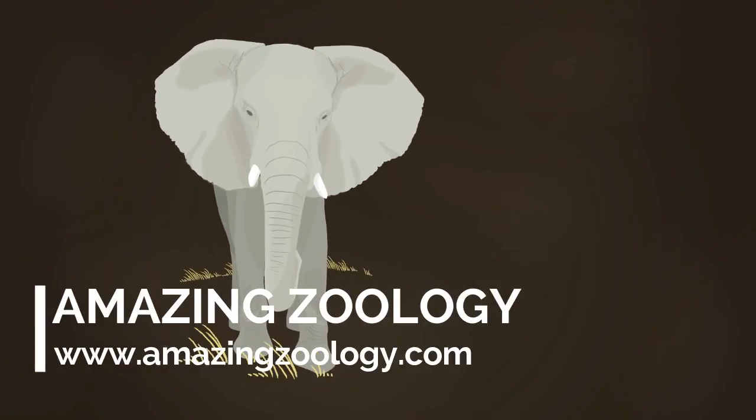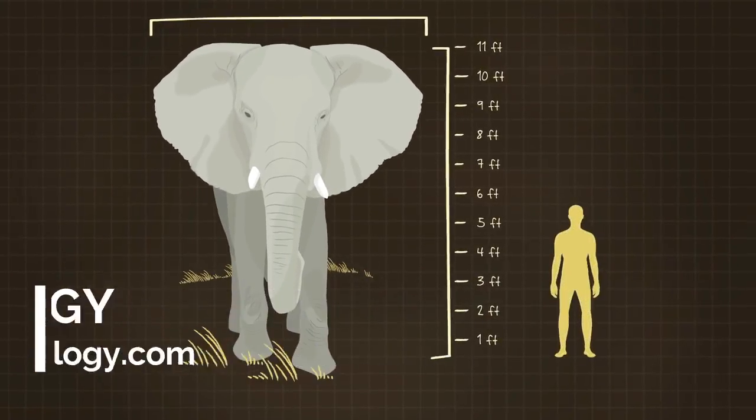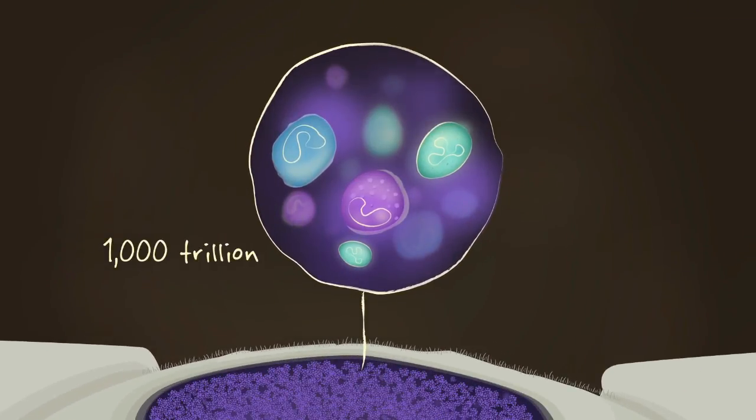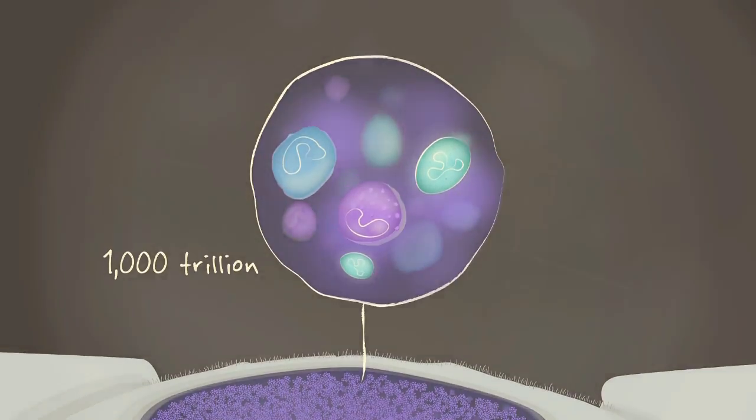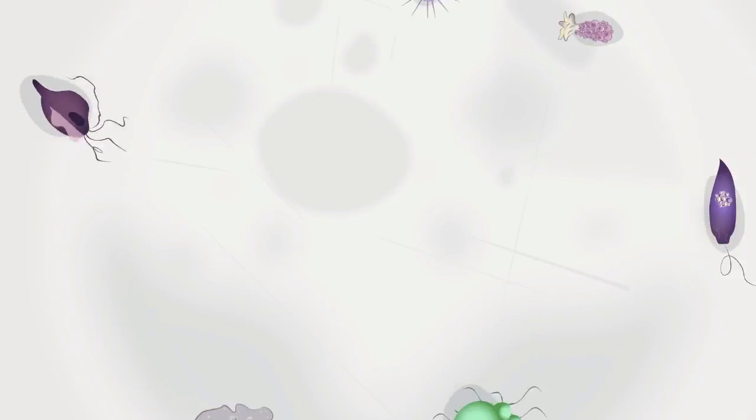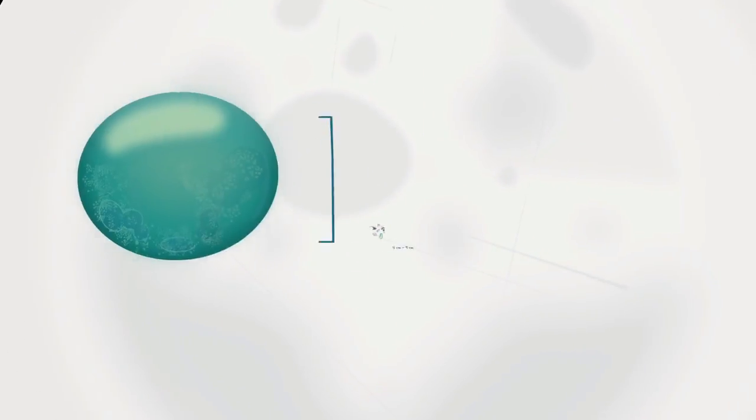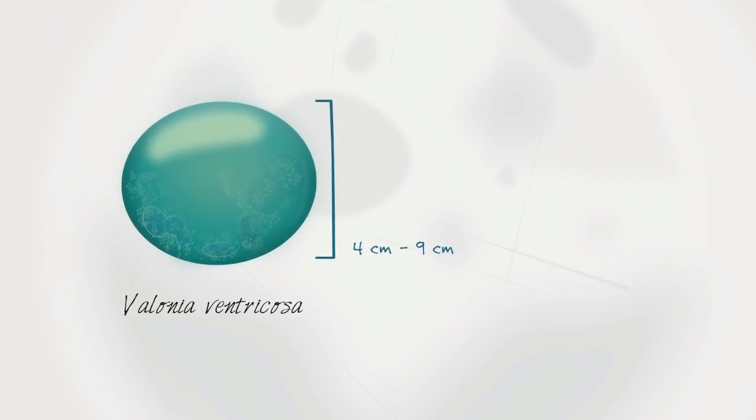The elephant is a creature of epic proportions, and yet it owes its enormity to more than 1,000 trillion microscopic cells. And on the epically small end of things, there are likely millions of unicellular species, yet there are very few we can see with the naked eye. Why is that?